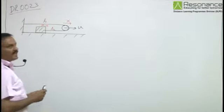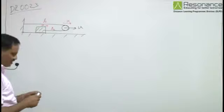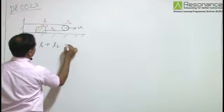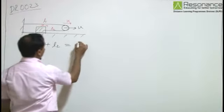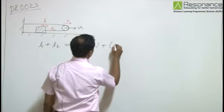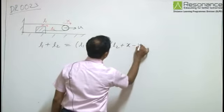As the string is inextensible, the length of the string will remain constant. So we can write: l1 plus l2 equals l1 plus x plus l2 plus x minus y.